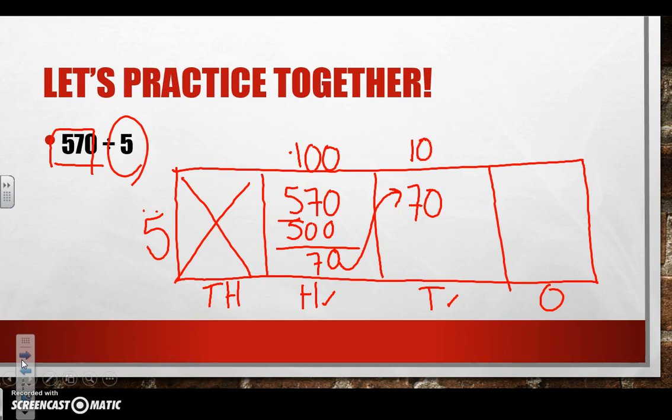We do our same step again. What is 10 times 5? 50. We write it down. We subtract. When I subtract 50 from 70 I'm left with 20. Remember we need to bring that over.